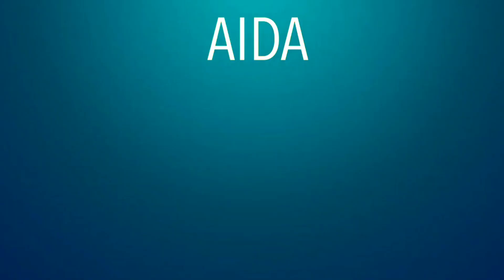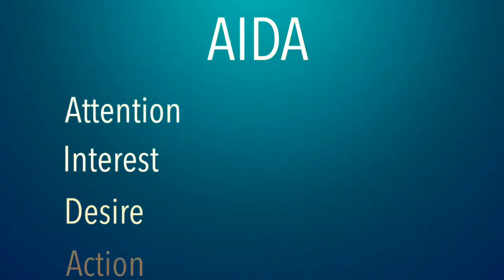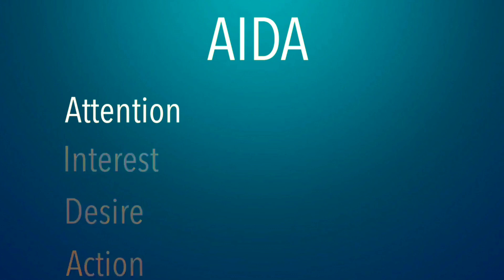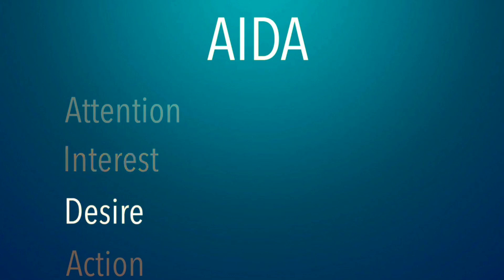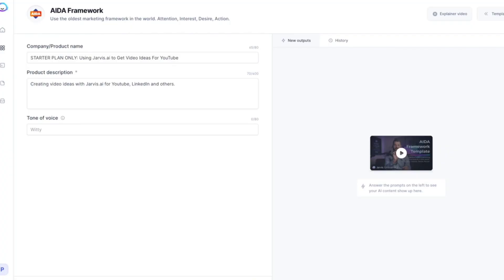Alternatively, you can also use the AIDA framework template. This template stands for Attention, Interest, Desire, and Action. When you use this template, it generates content that gets attention to your video, then turns that attention into interest to keep people watching through the hook, builds desire to get people to watch your full video, and the action refers to the goal of your video — whether you want viewers to like the video, subscribe to your YouTube channel, or maybe even buy a product you are promoting.